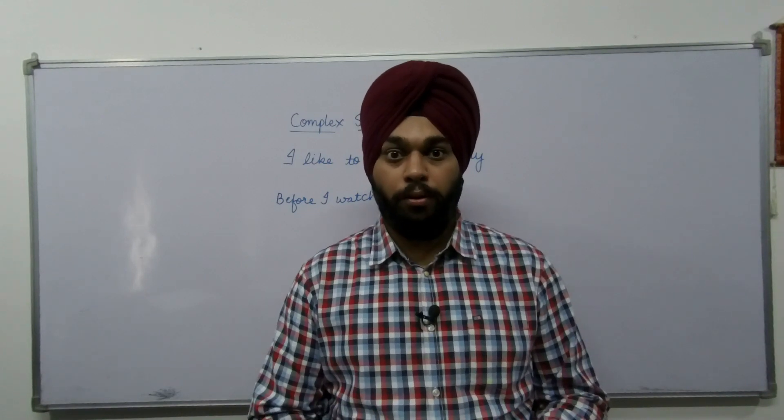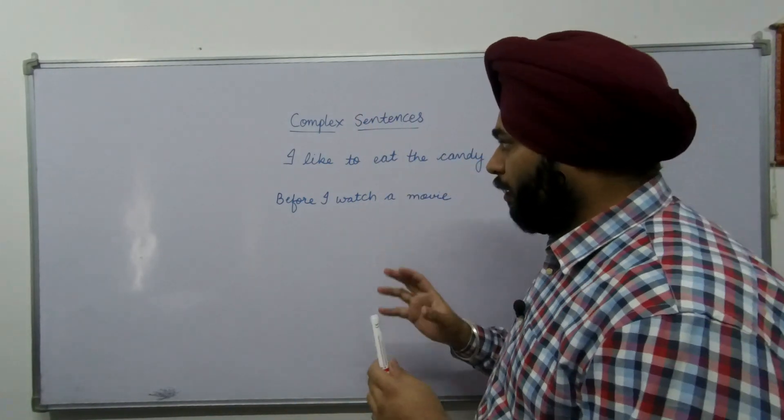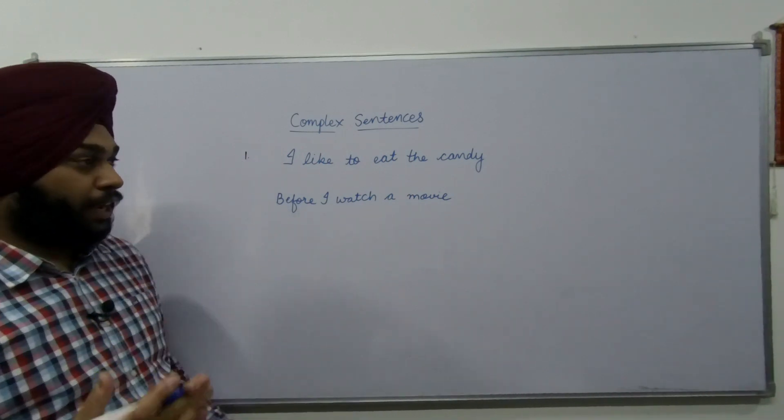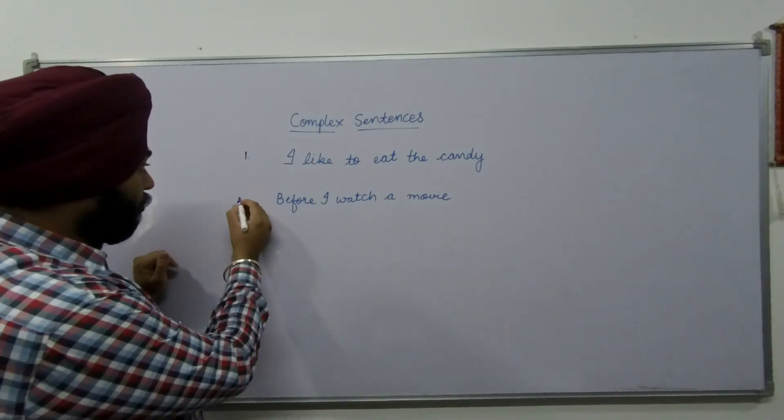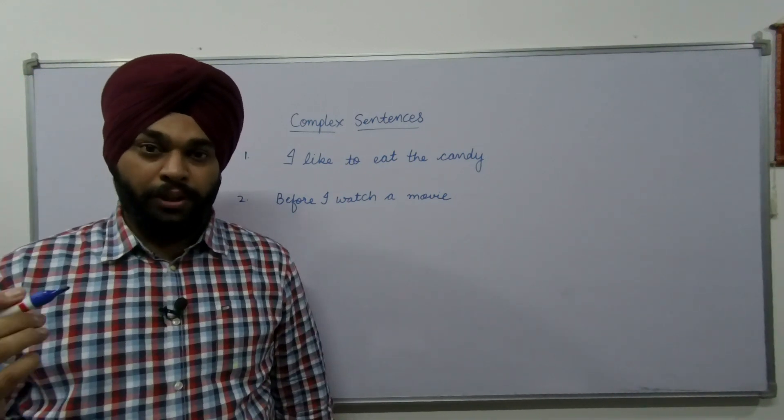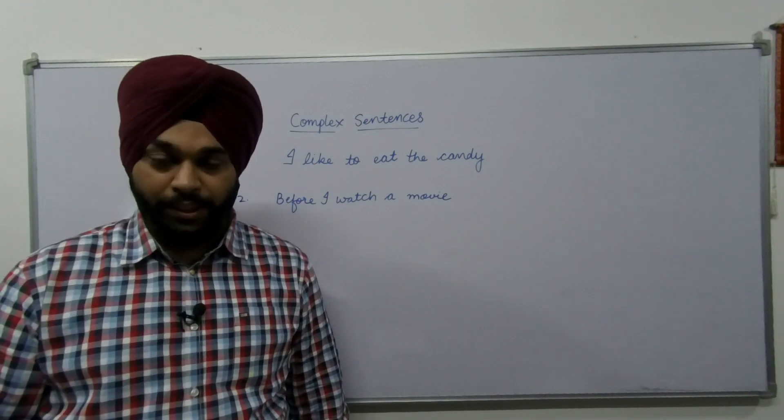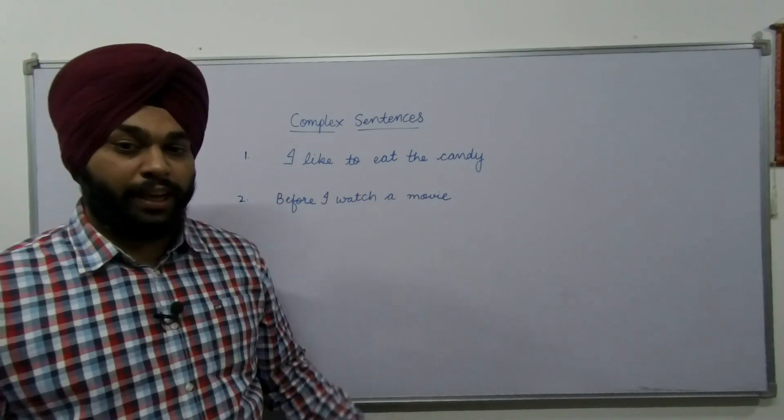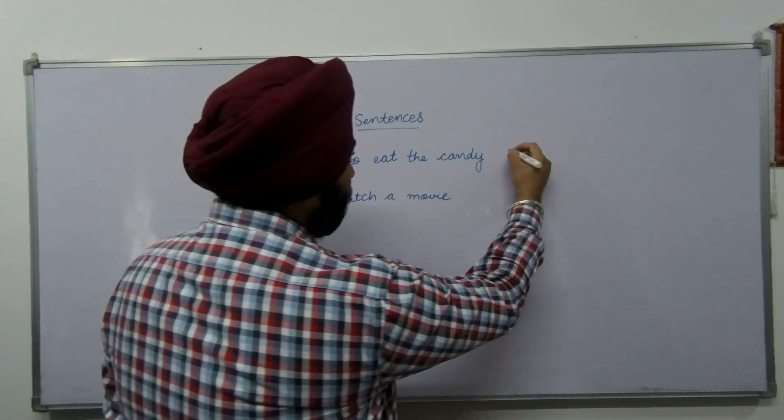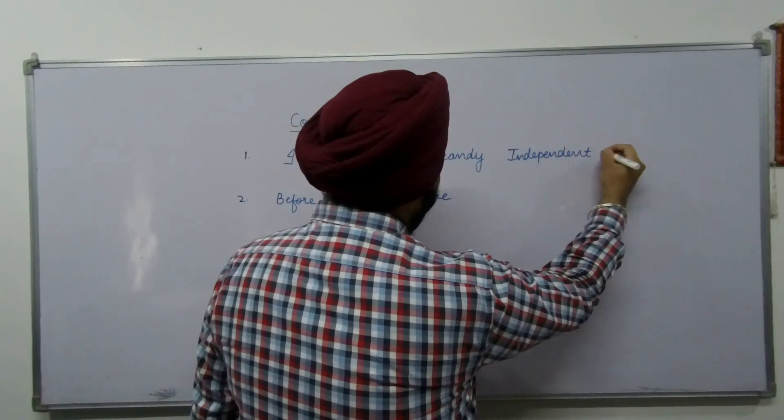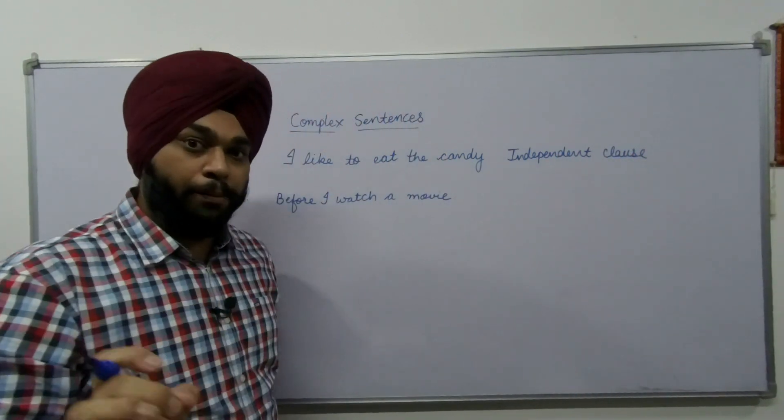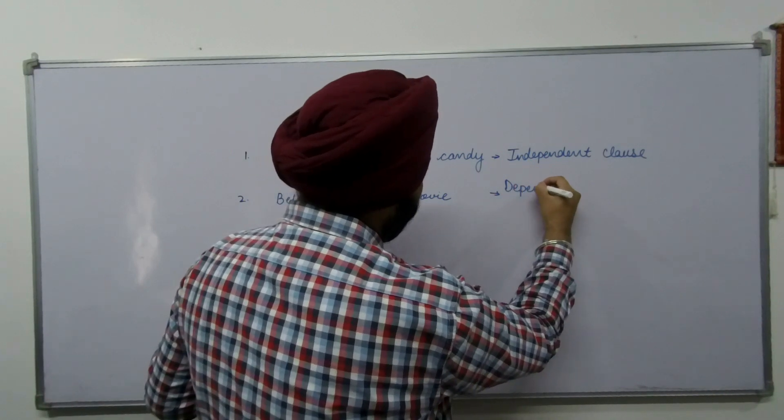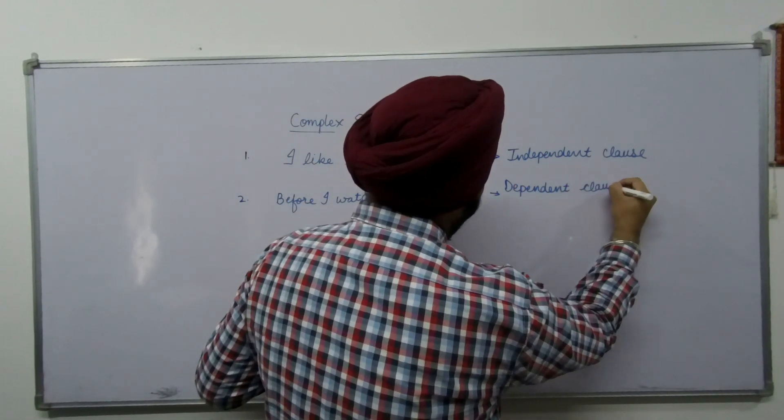First of all, I will explain to you what complex sentences are. If you can clearly see on the board, I have written two different sentences. Sentence number one is I like to eat the candy. Sentence number two is before I watch a movie. One of these two sentences is a complete sentence and the other one is incomplete. The complete sentence is I like to eat the candy. Complete sentences are known as independent clauses, whereas the incomplete sentence is known as dependent clause.